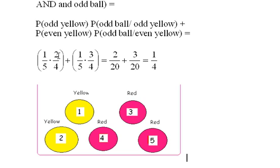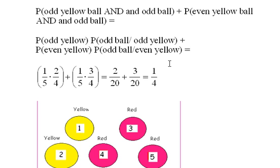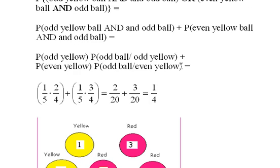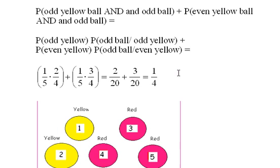Then of course we do the arithmetic. That's 2/20 plus 3/20, and add those up and you get 5/20 which is 1/4. So the probability of drawing—the original problem was a yellow ball and an odd ball—is one fourth.